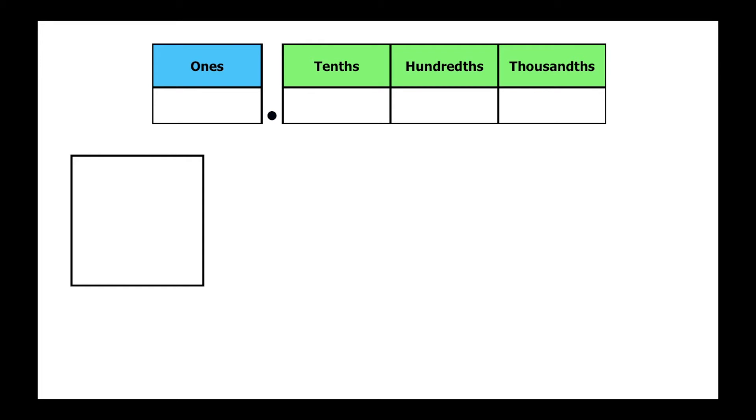Take a look at the square. This is one whole square, or just one. When we write its value in the place value chart, we would place a one in the ones place because it is one whole.